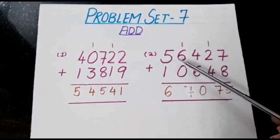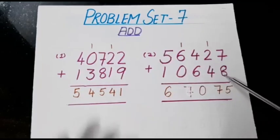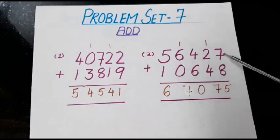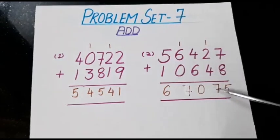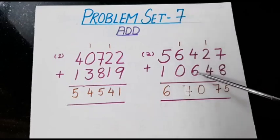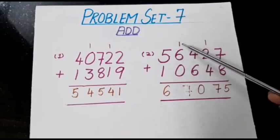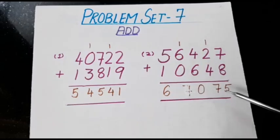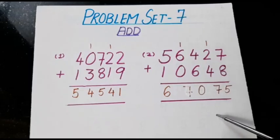Next sum: 56,427 plus 10,648. Start from the end. 8 plus 7 is 15, so we write 5 and carry 1. 1 plus 2 plus 4 is 7. Next, 4 plus 6 is 10, so we write 0 and carry 1. Then 6 plus 1 is 7. And 5 plus 1 is 6. So our answer after adding these two numbers is 67,075.